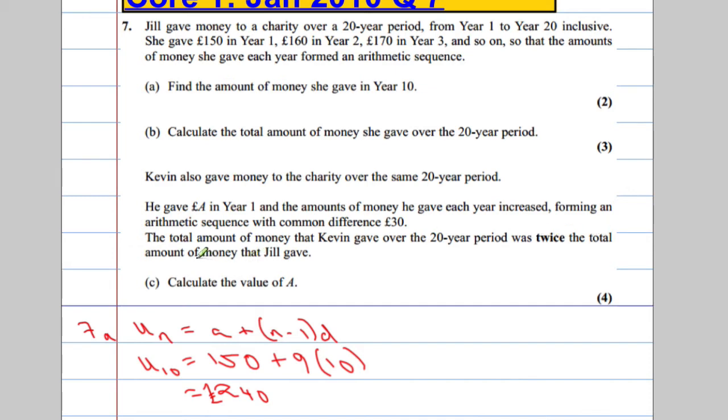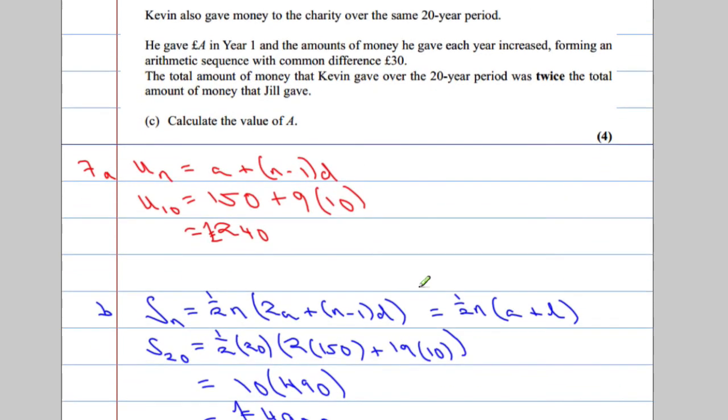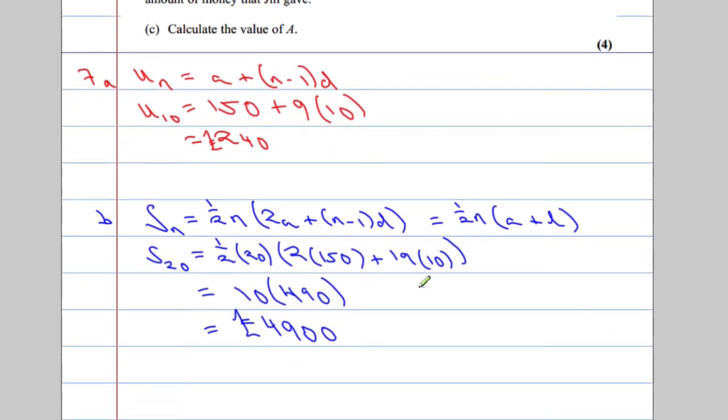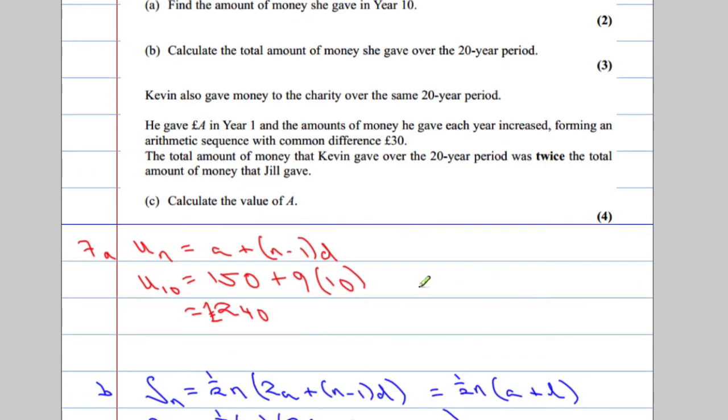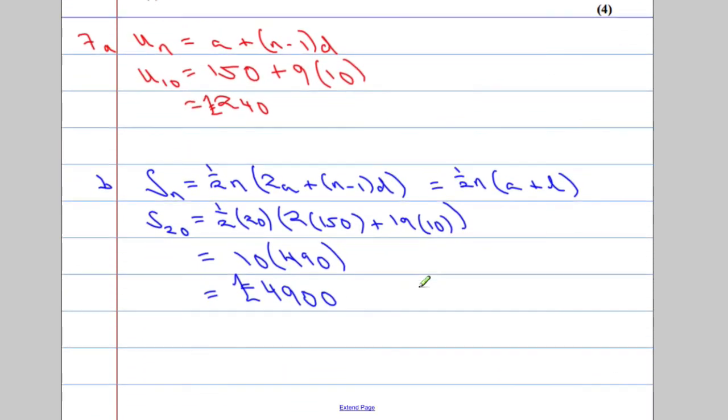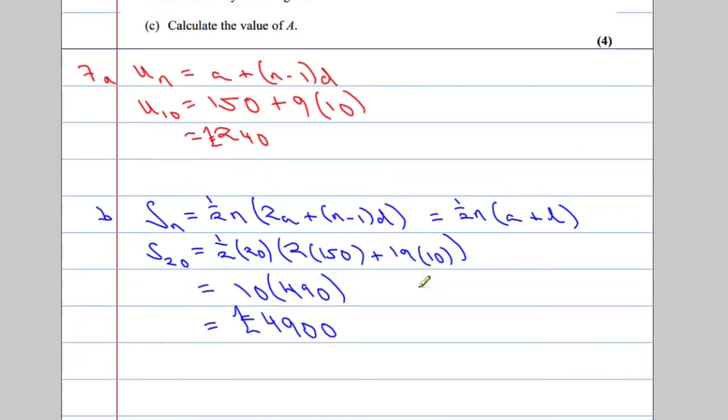With a common difference of £30. The total amount of money that Kevin gave over the 20-year period was twice the total amount that Jill gave. Calculate the value of A. Right, so we know that the amount that he gave was double the amount that Jill gave. Let's write down, what's his name? Kevin. So Kevin gave double.